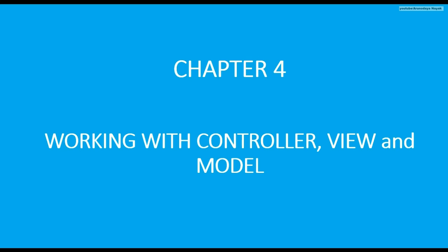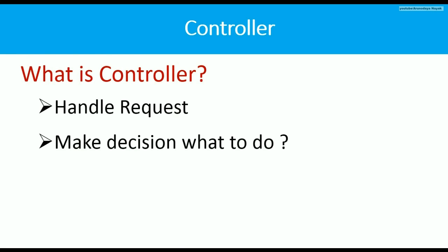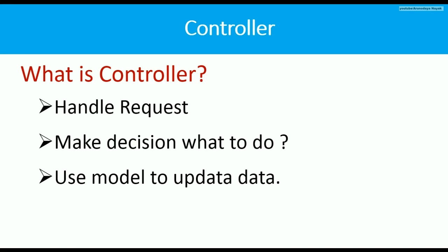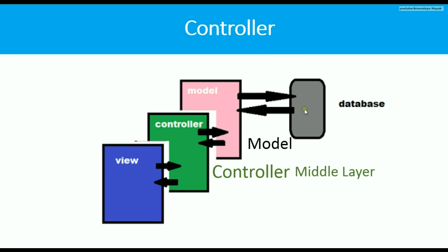What is a controller? A controller handles the request and makes decisions on what to do. Controllers access data by using the model, and controllers also create and render view files. This is the graphical representation of model-controller-view. The controller is the middle layer, and the model is behind the controller — it talks to the database.